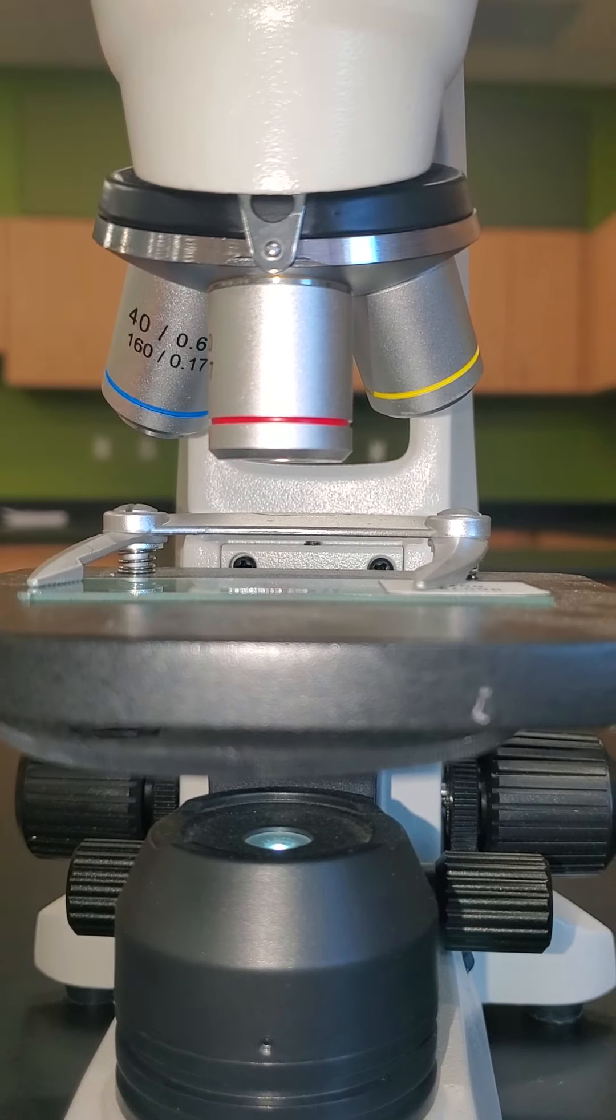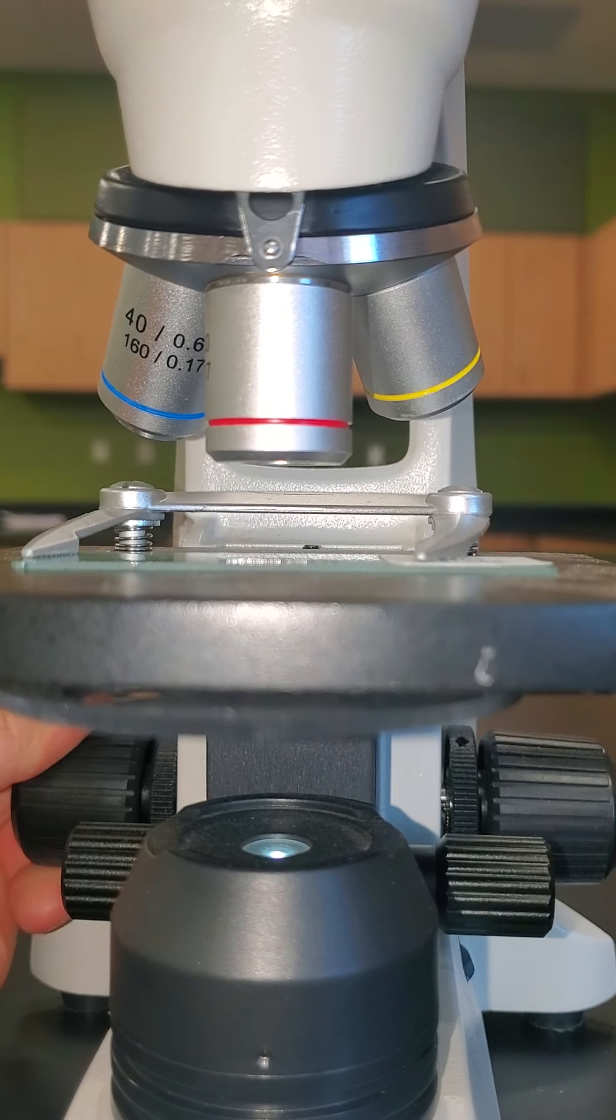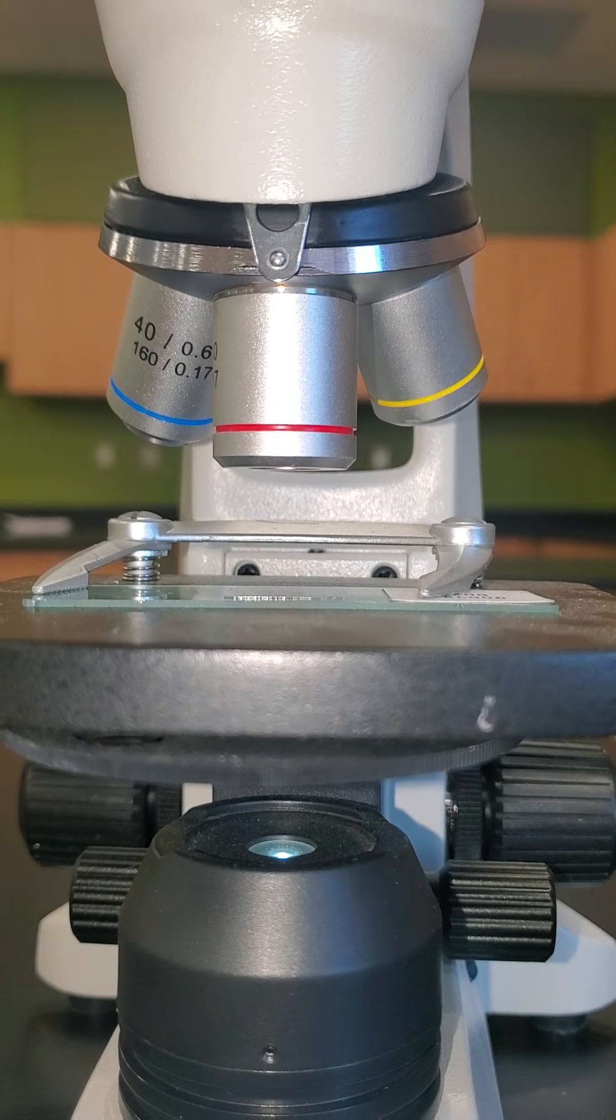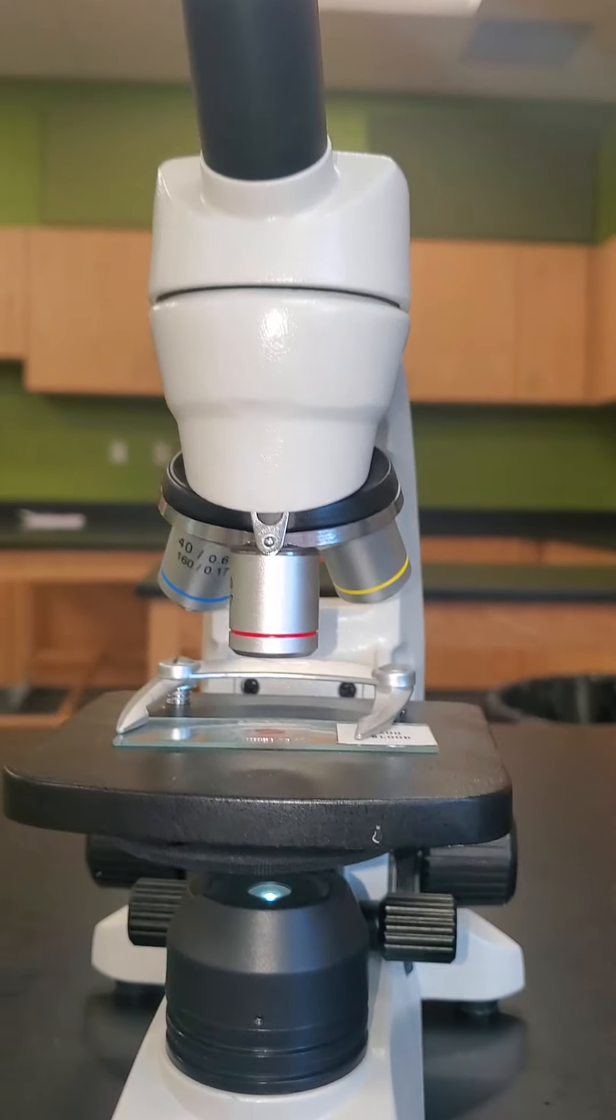Typically with the red lens we don't have to worry about that as much. The red lens is shorter, it does not come as close to the specimen, so we have to pay attention to that.